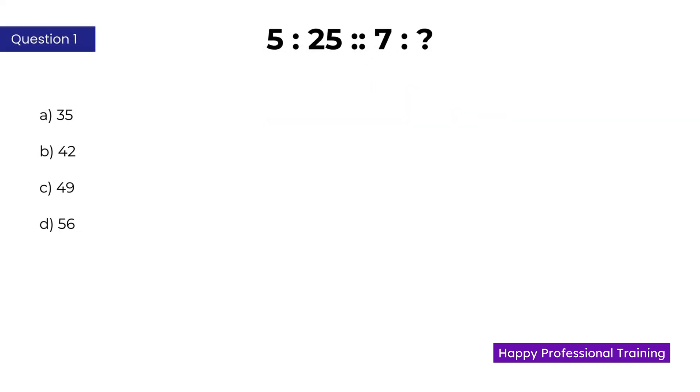Now let's start with the practice set. What's the first step we do? We identify the pattern between the first pair of numbers. Here the second number is the square of the first number. So 5 square is 25. When we apply the same pattern to the second pair, 7 square is 7 into 7 which is 49. Do we have the answer here? Yes. C is the correct answer.